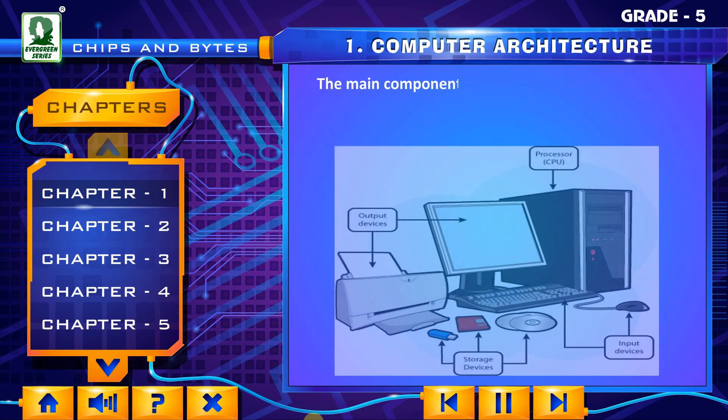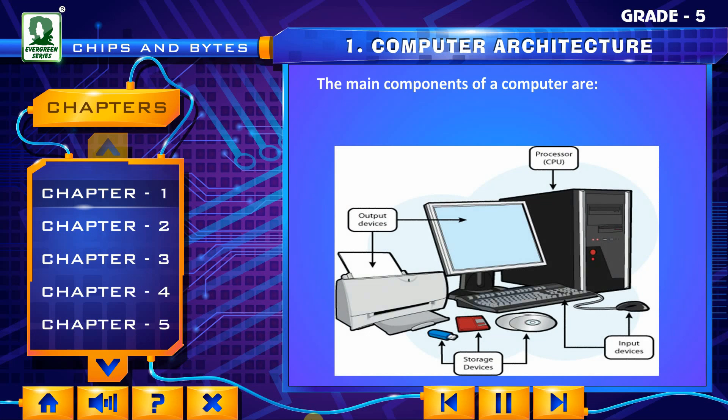The main components of a computer are Input Devices, Processor (i.e., CPU), Output Devices, and Storage Devices.